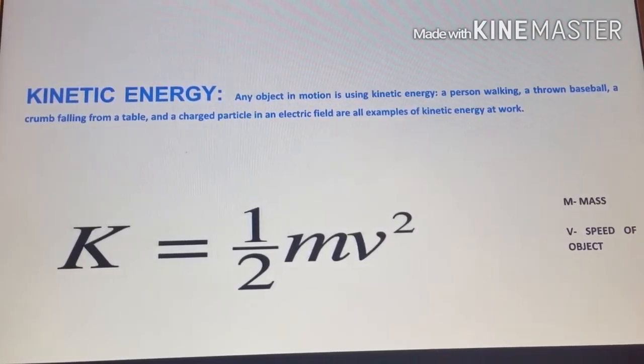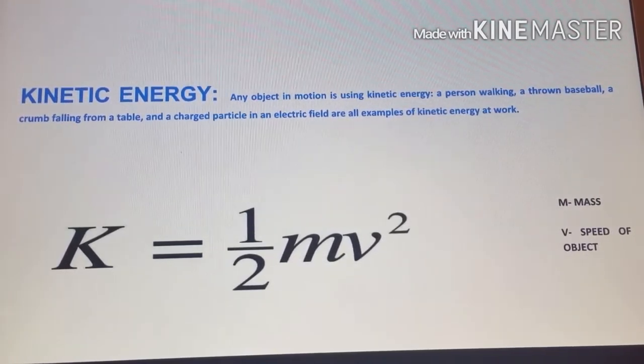The formula here is the one we will be using to find kinetic energy. The M represents the mass, and the V represents the speed of object.